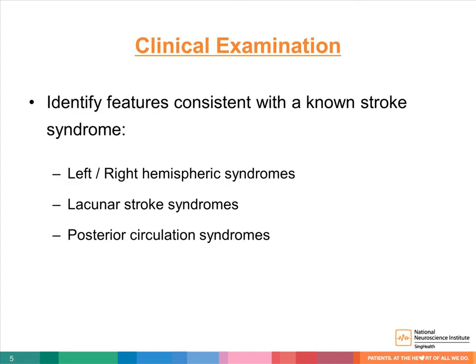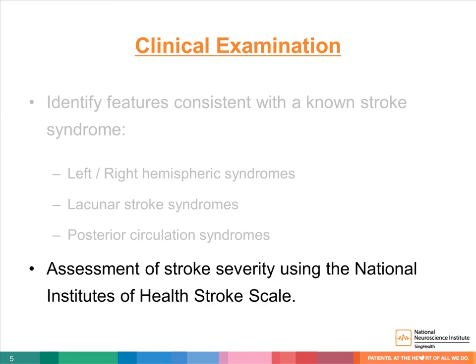In addition to history taking, one will also perform a clinical examination to identify features consistent with the suspected stroke syndrome. These include left or right hemispheric syndromes; lacunar syndromes such as pure motor, pure sensory, sensory-motor, ataxic hemiparesis, or clumsy hand dysarthria; or posterior circulation syndromes such as lateral medullary syndrome. As part of the examination, it is also important to assess the severity of stroke with a validated, standardized stroke scale.